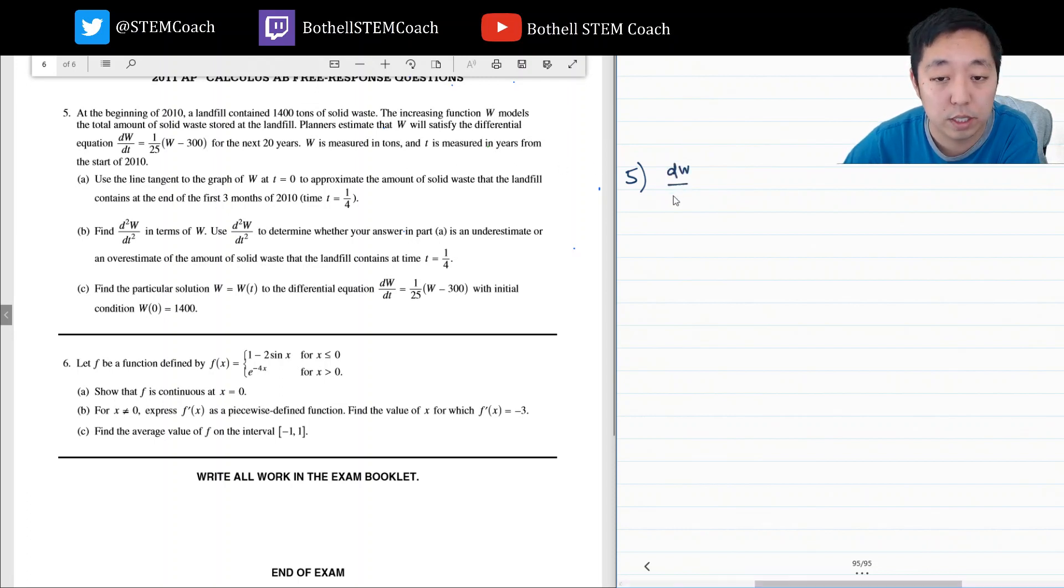Okay, dW/dt. We're doing A equals 1 over 25 times W minus 300. Now the derivative at T equals zero, I need to know what W is. At the beginning, it contains 1,400 tons.